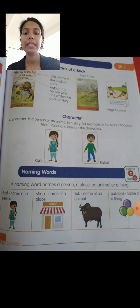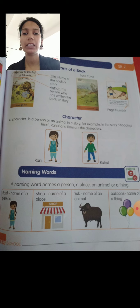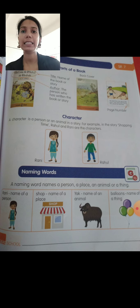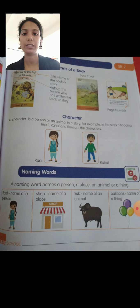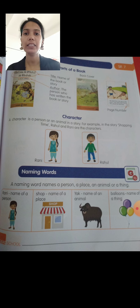Next comes naming words. Naming words are the names of a person, place, thing, or an animal. These are also called nouns. For example: Rani, shop, yak, and balloons.